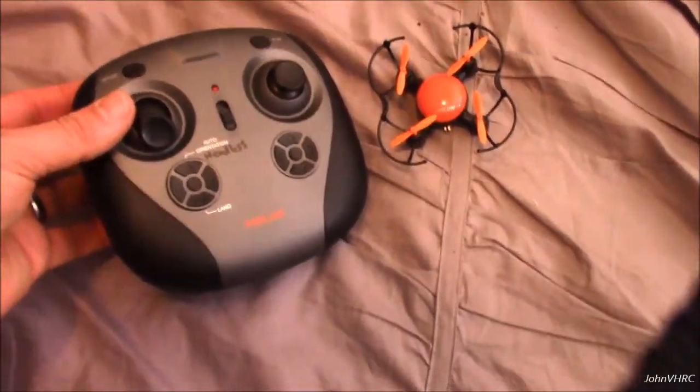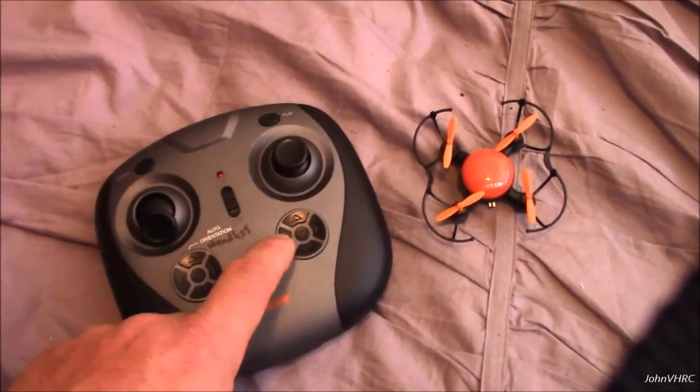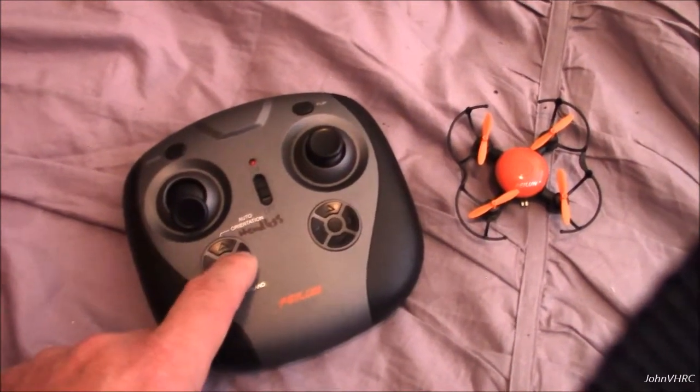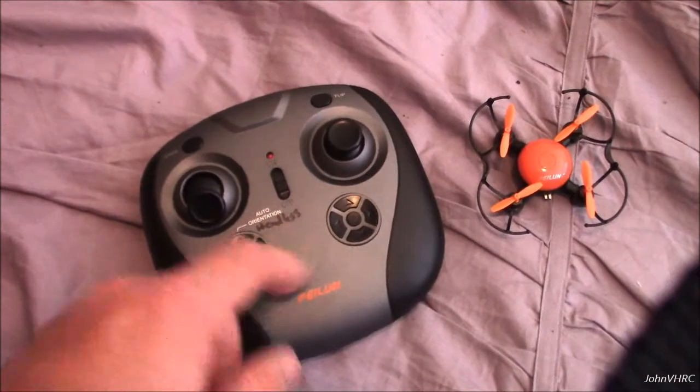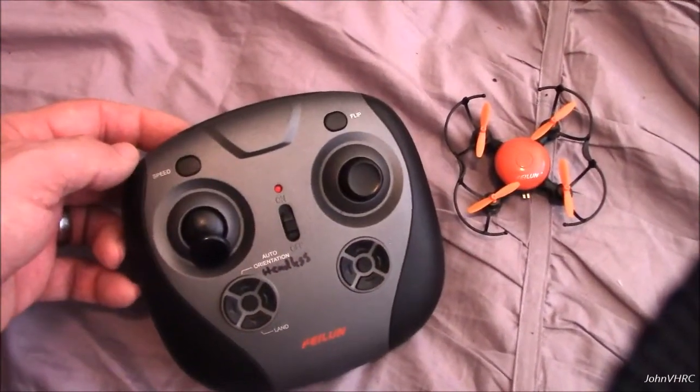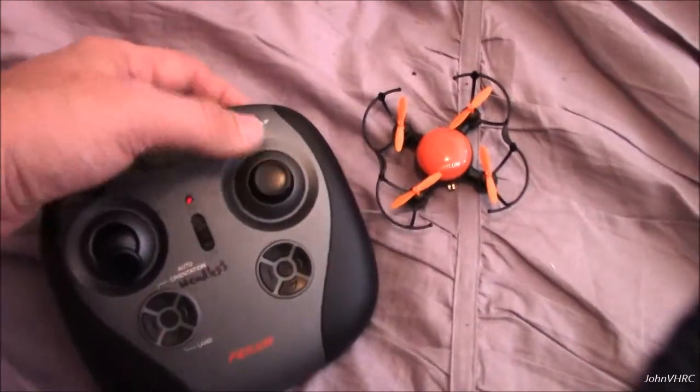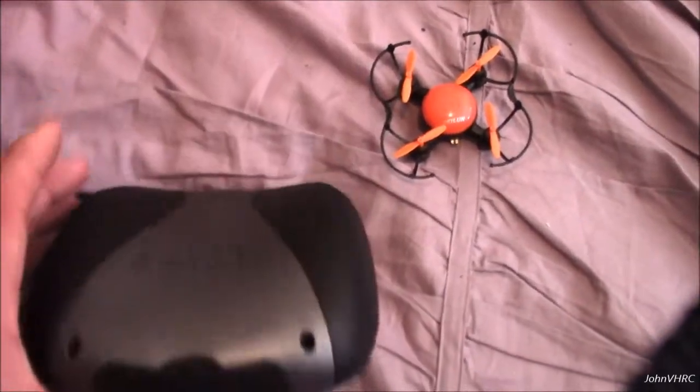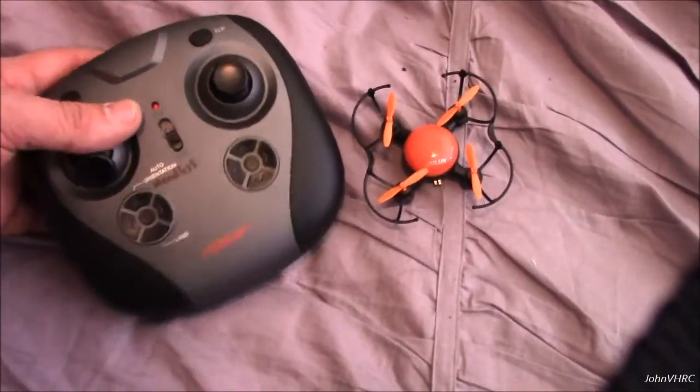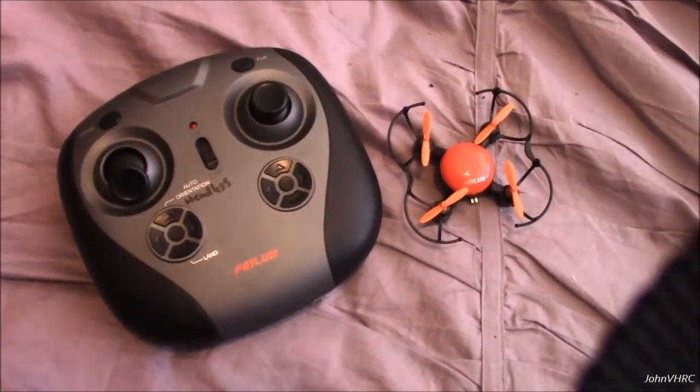Okay, here's a quick look at the transmitter. You got the land button. These are trims. You got your right, left, forward, back. Your yaw trim. Auto orientation or headless mode. Here's your rates for low, high, medium. Here's your flip button. So you push that and choose which direction you want to flip. Obviously, your throttle. Yeah, it's a pretty comfortable little transmitter, and a pretty great flying machine. So hope you enjoy it.